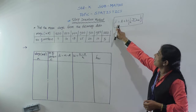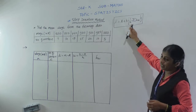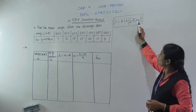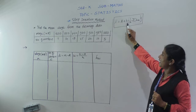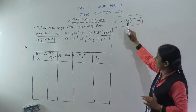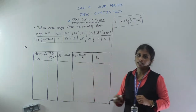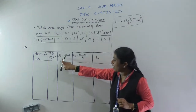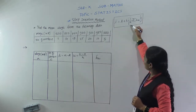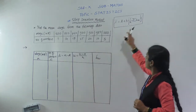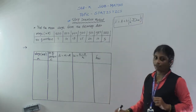So what is the formula for the step deviation method? x̄ equals A plus h times (1/n) times summation of fi·ui. Here A is your assumed mean, h is a common factor selected from the di values — the number which divides all di values. And n is the sum of all frequencies, and we have to find the summation of fi·ui.